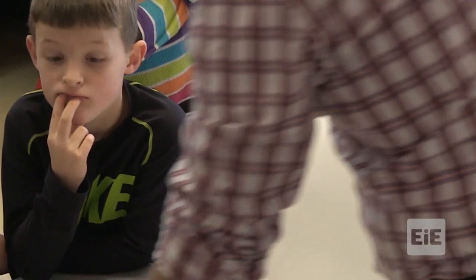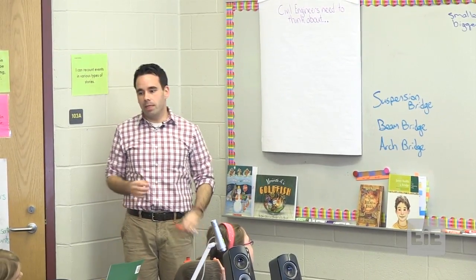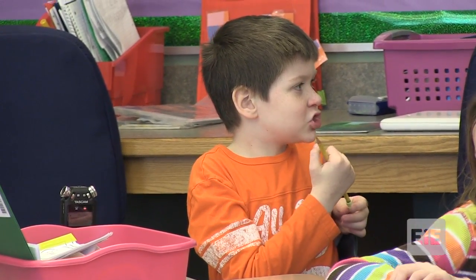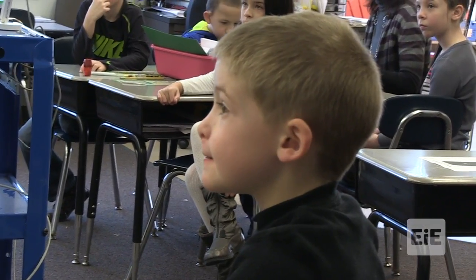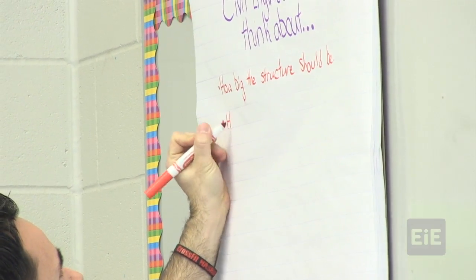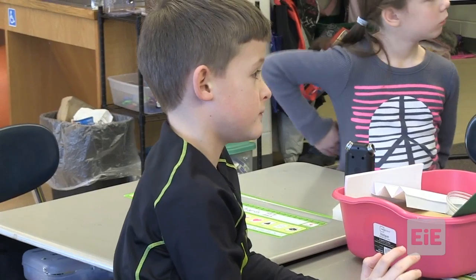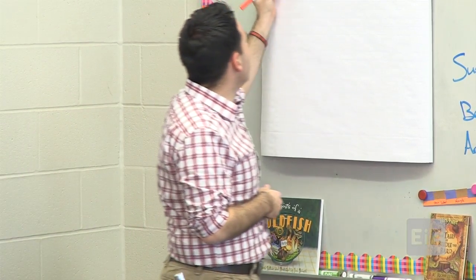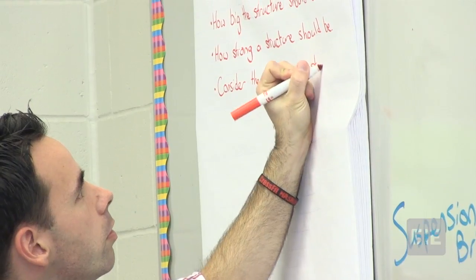Let's talk about what civil engineers need to think about when they design bridges — how big or small it will be, and how strong or not strong it will be. How big the structure should be, and how strong a structure should be. Will it push or pull? What's that word we can use to call it? Force. They need to consider the force on a structure.